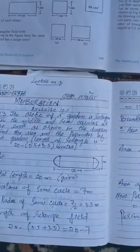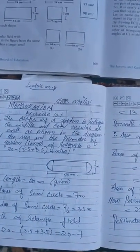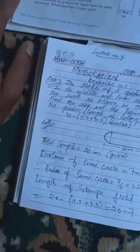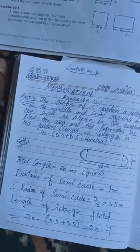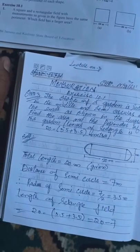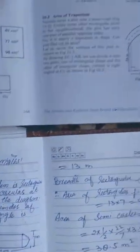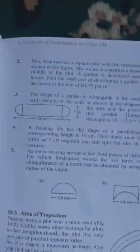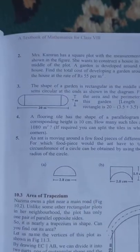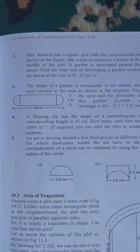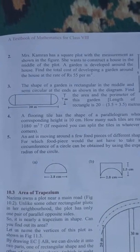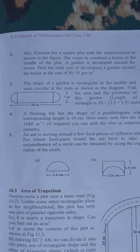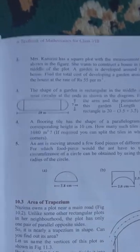Assalamu alaikum students. This is chapter number 10, section 10.16, continuing the Mensuration class. Question number 3: The shape of a garden is rectangular in the middle and semicircular at the ends, as shown in the diagram. Find the area and perimeter of the garden.